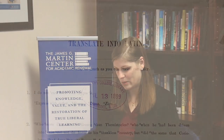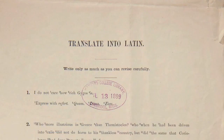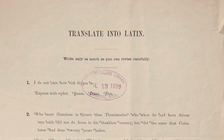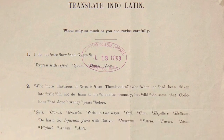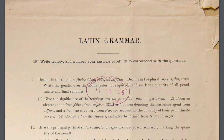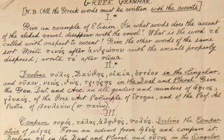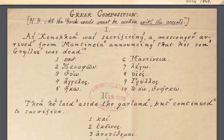High schools have dumbed down their content and admissions requirements have been dropping at schools across the country. Right here I have a Harvard entrance exam from 1869 and it is significantly different from what we see today. The first page asks students to translate into Latin — the first item is to translate 'I do not care how rich Gyges is.' It goes on then to Latin grammar, Greek grammar, and Greek composition.